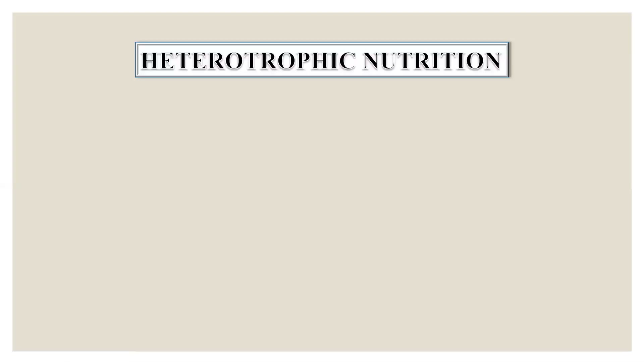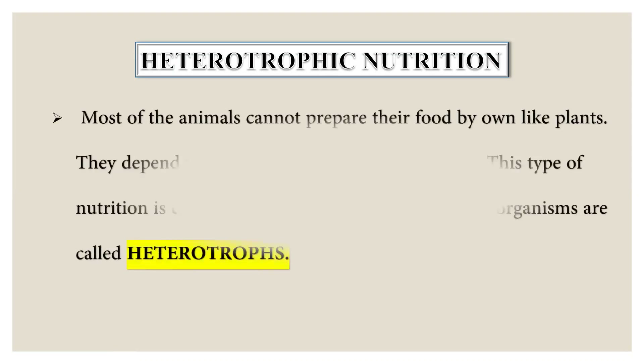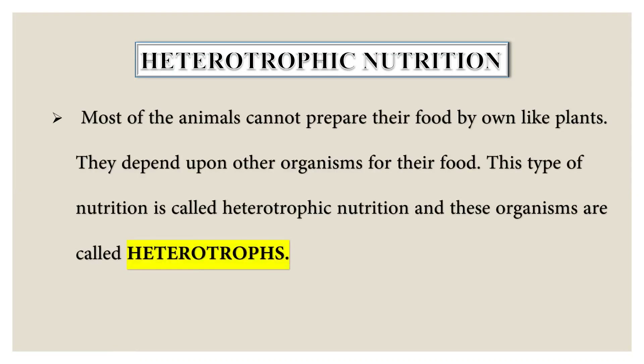Heterotrophic nutrition — what is the meaning of heterotrophic nutrition? Heterotrophic organisms are mostly those that depend on other organisms for their food. This type of nutrition is called heterotrophic nutrition, and these organisms are called heterotrophs. An example of heterotrophic nutrition is animals.